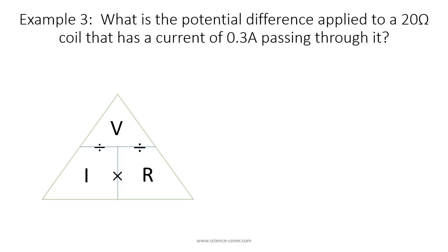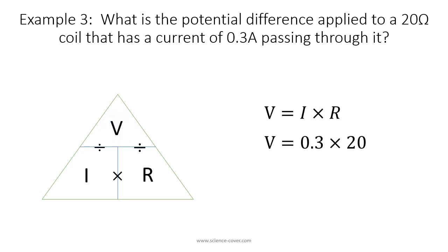What is the potential difference applied to a 20 ohm coil that has a current of 0.3 amps passing through it? We want the potential difference, so we cover up V, which tells us V = I × R. I is 0.3 and R is 20, so 0.3 times 20 is 6. The voltage must be 6 volts.